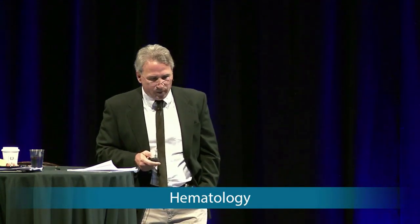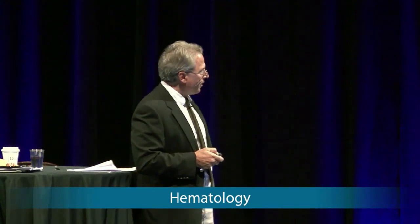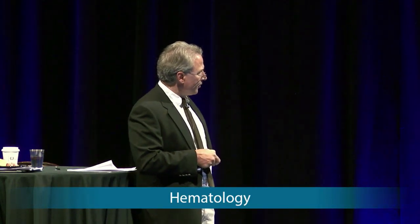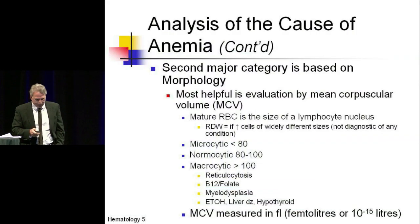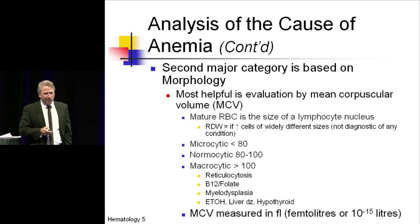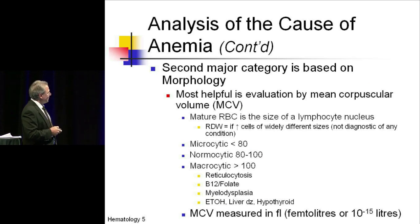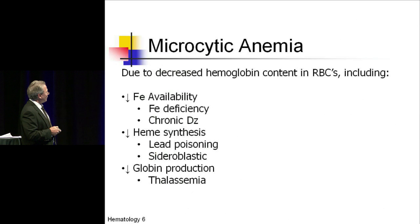Microcytic is less than 80 femtoliters. Normocytic is 80 to 100. Macrocytic is greater than 100, with issues such as reticulocytosis — the ones we always think about: B12, folate, myelodysplasia, alcoholism, liver disease, and the like. A femtoliter is 10 to the minus 15 liters, if you want a fun fact.